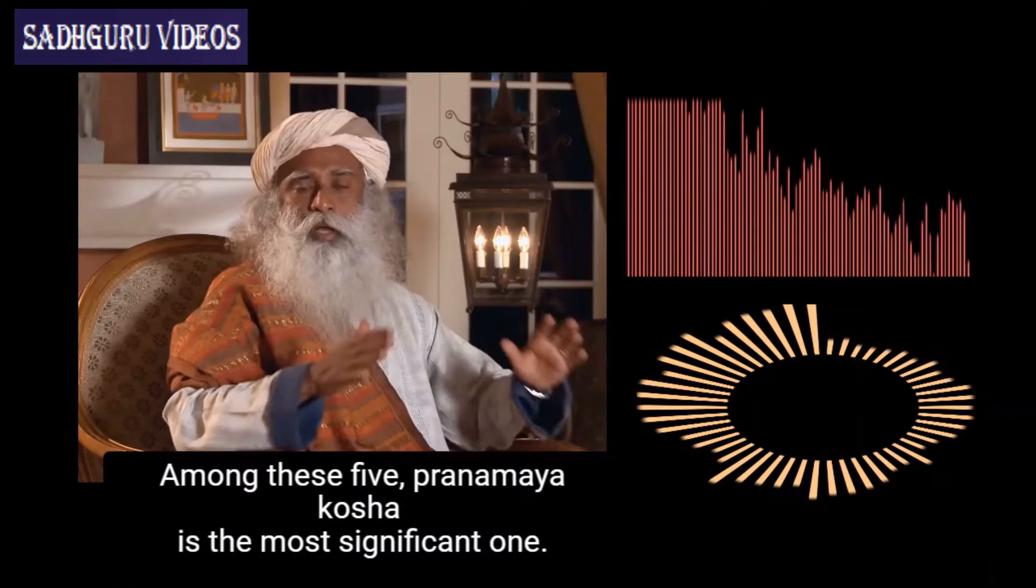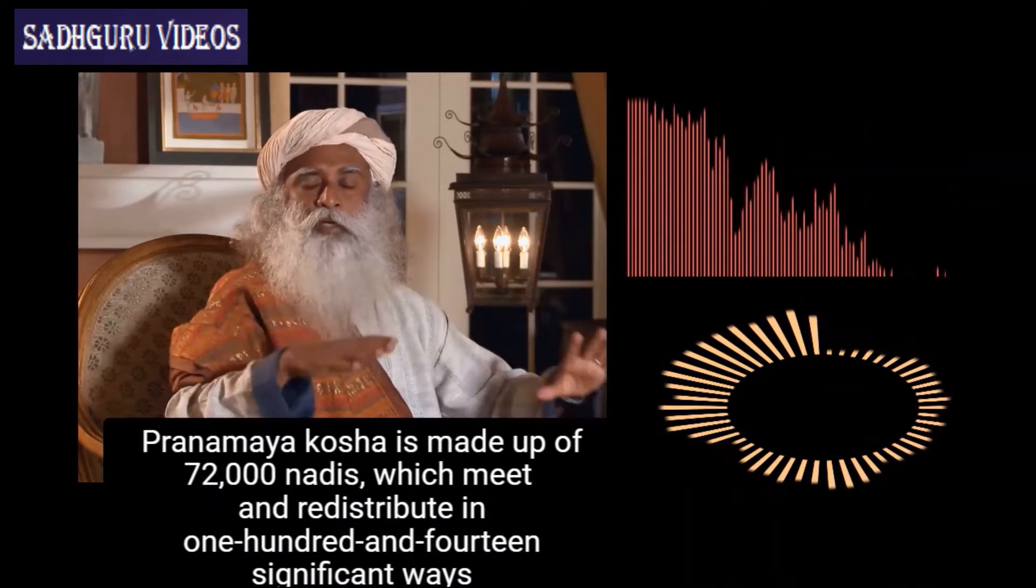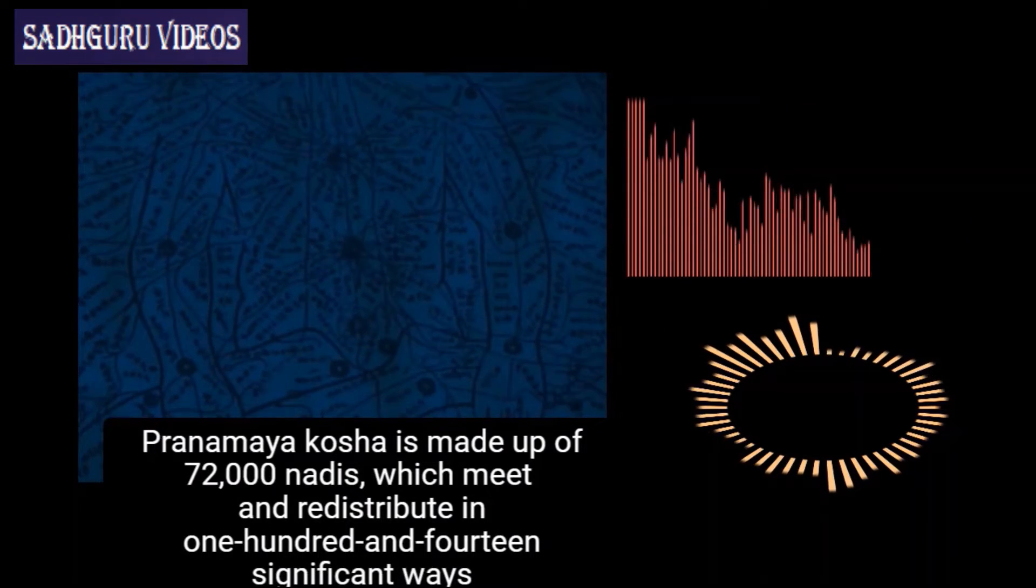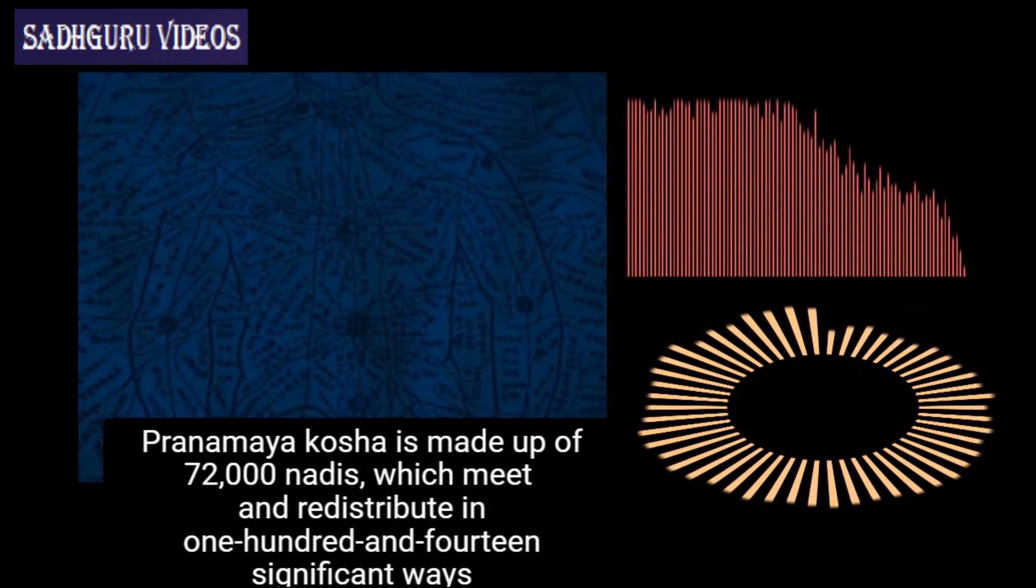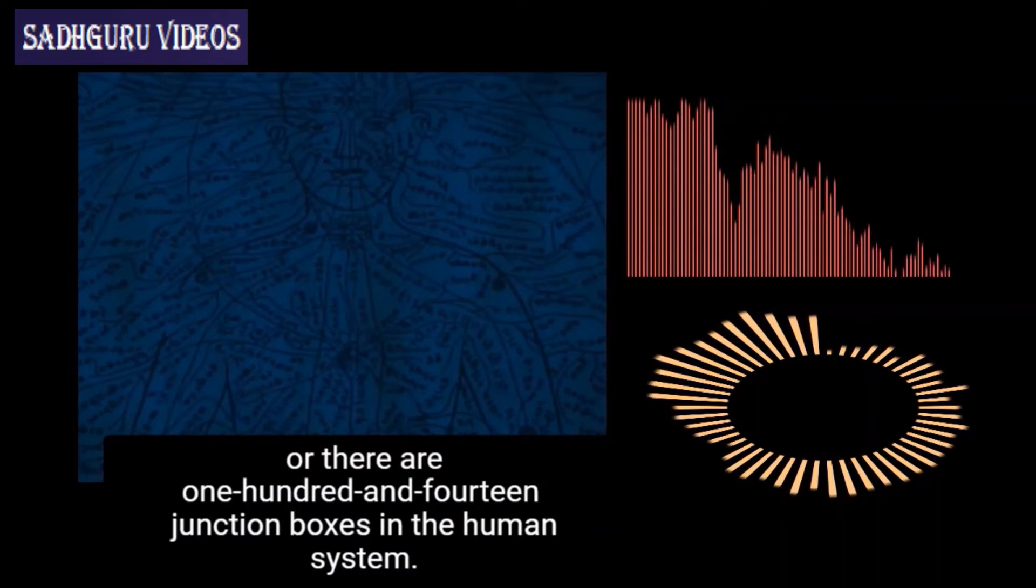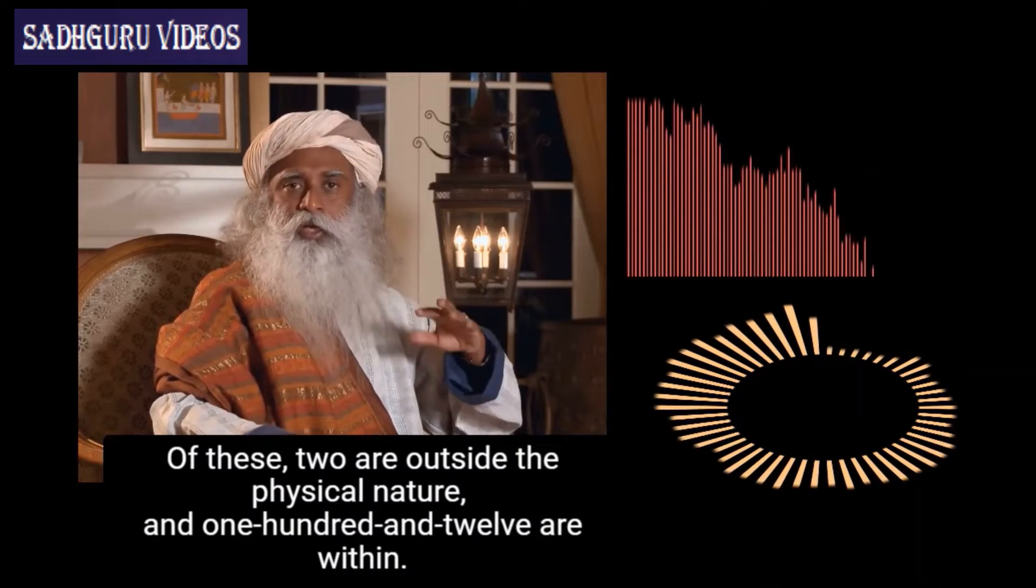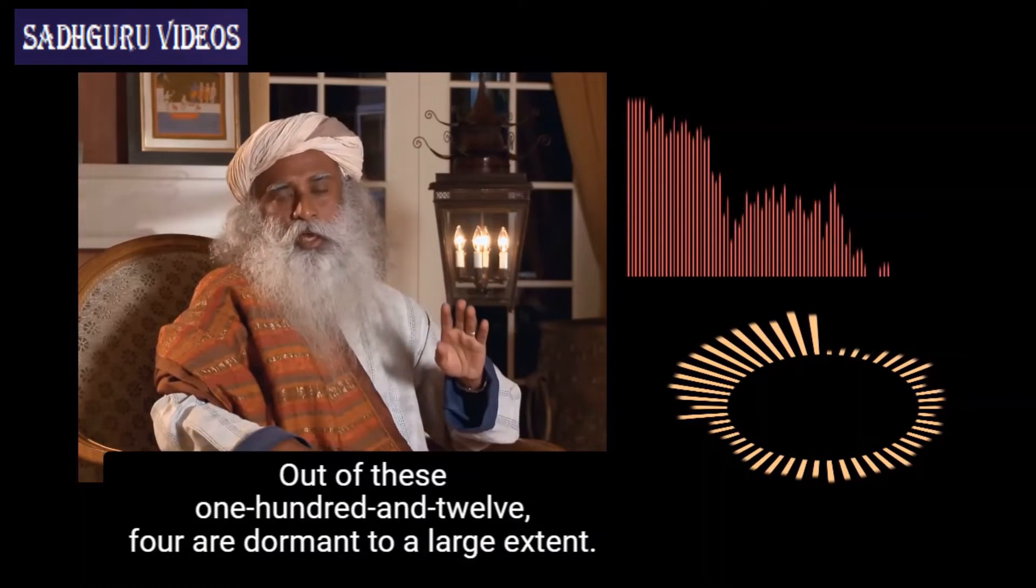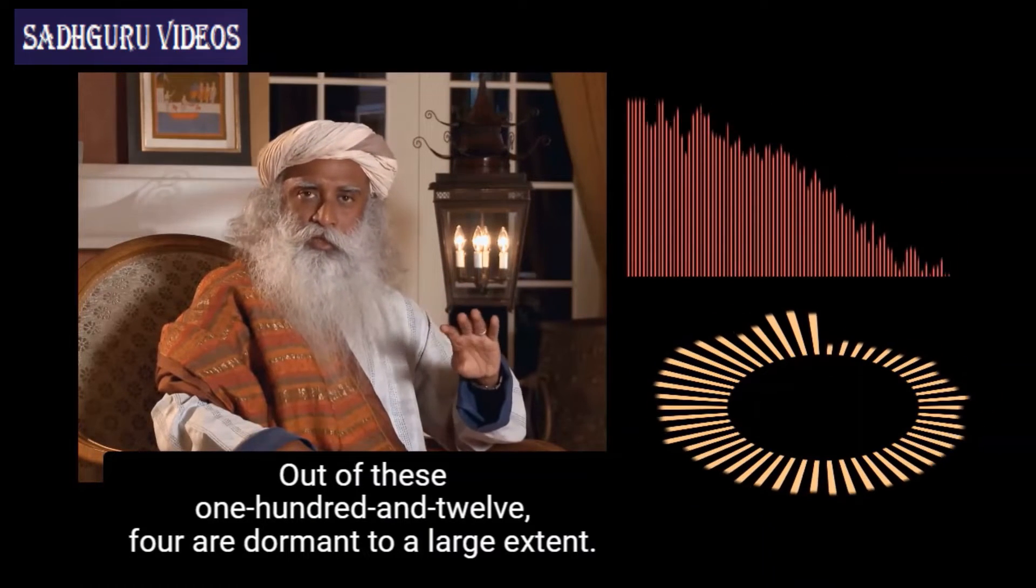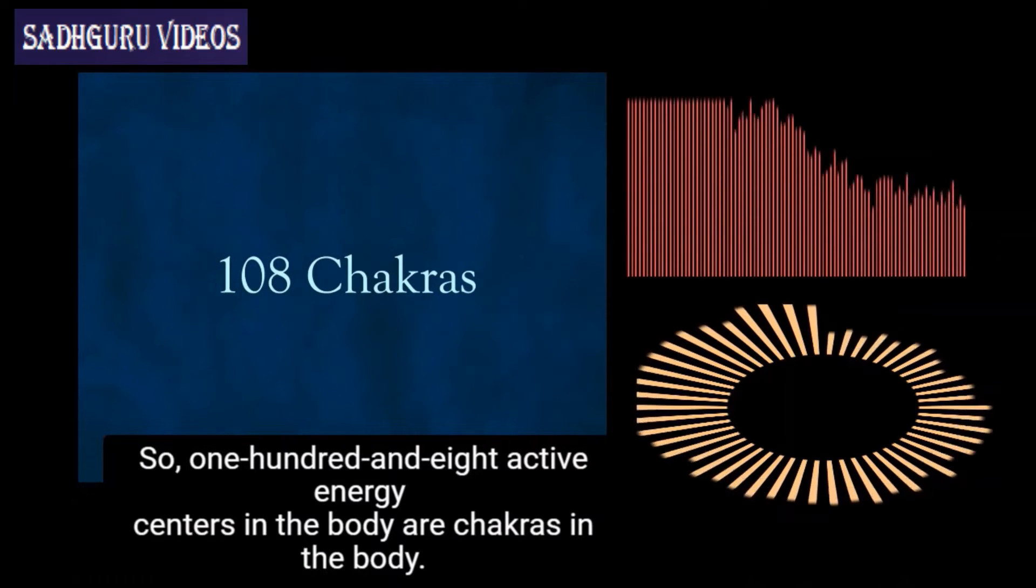Among these five, pranamaya kosha is the most significant one. Pranamaya kosha is made up of 72,000 nadis which meet and redistribute in 114 significant ways, or there are 114 junction boxes in the human system. Of these, two are outside the physical nature and 112 are within. Out of these 112, four are dormant to a large extent. So there are 108 active energy centers or chakras in the body.